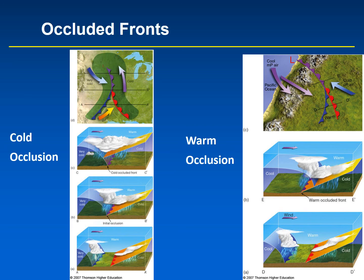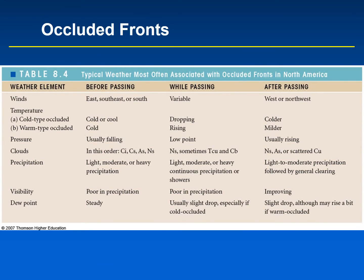What type of weather is associated with occluded fronts? Before it passes, winds are either east, southeast, or south, and temperatures are either cold or cool depending on whether it's a cold or warm occluded front. Clouds lower as the occluded front approaches — before it passes, there can be high clouds like cirrus and cirrostratus, then they lower into altostratus and eventually nimbostratus. There can be light, moderate, or heavy precipitation before the passage of the occluded front. Occluded fronts can have a variety of weather associated with them, including poor visibility due to precipitation and a steady dew point.